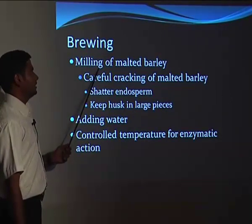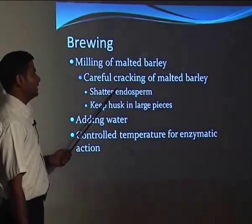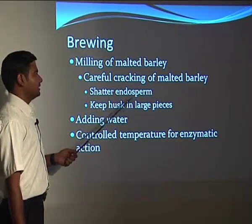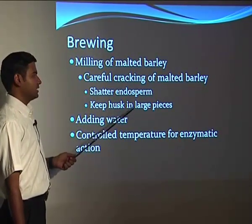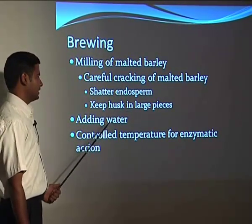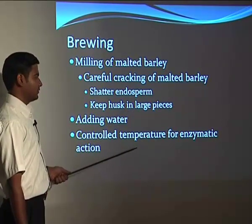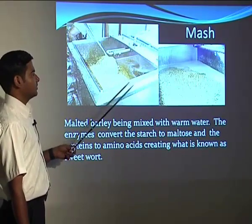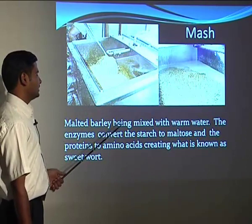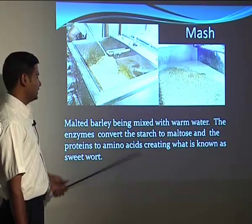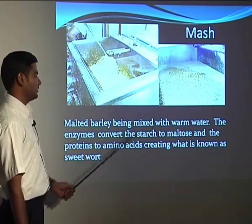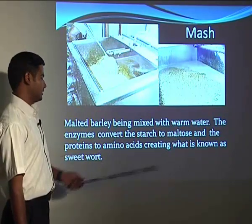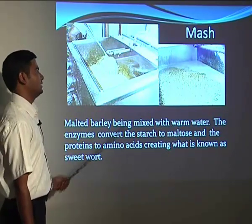Brewing contributes to milling of malted barley by careful cracking of the malted barley, shattering the endosperm while keeping the husk in large pieces. Water is then added with controlled temperature for enzymatic action. Mashing takes place where the malted barley is mixed with warm water and enzymes convert the starch into maltose and proteins into amino acids, creating what is known as the sweetwort.